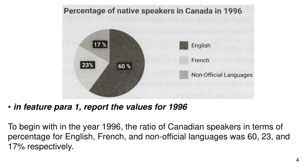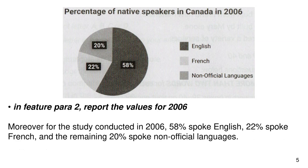To begin with, in the year 1996, the ratio of Canadian speakers in terms of percentage for English, French, and non-official languages was 60%, 23%, and 17% respectively. In Feature Para 2, report the values for 2006.